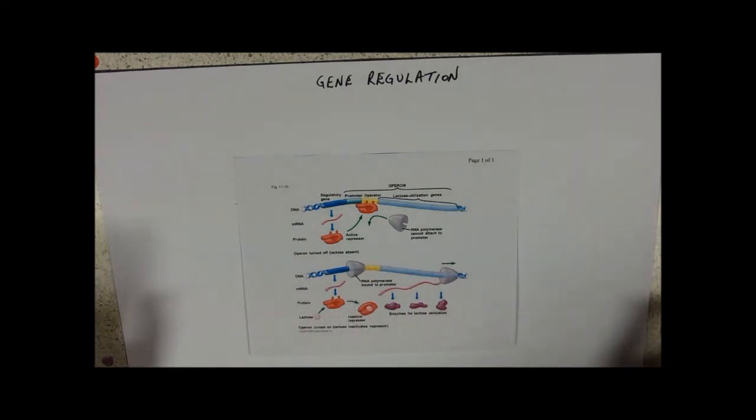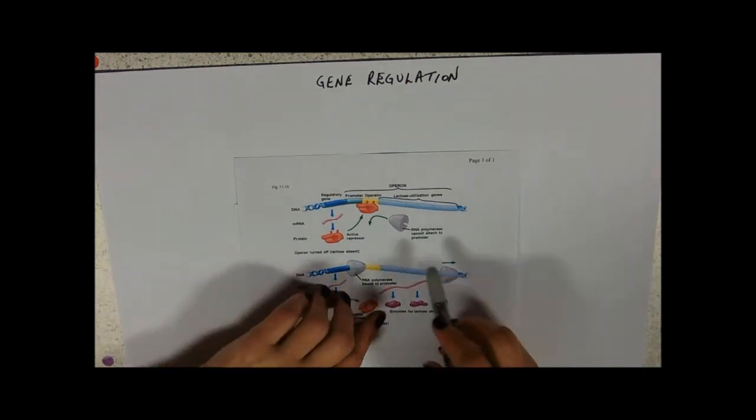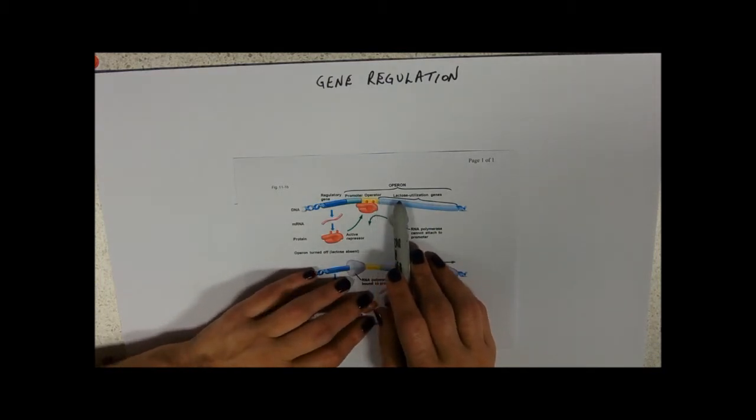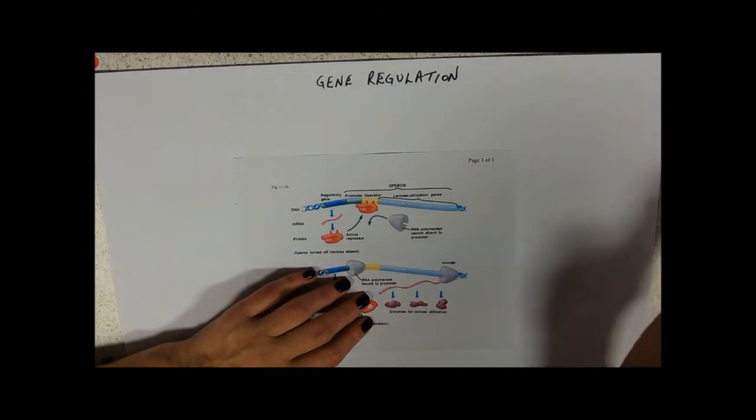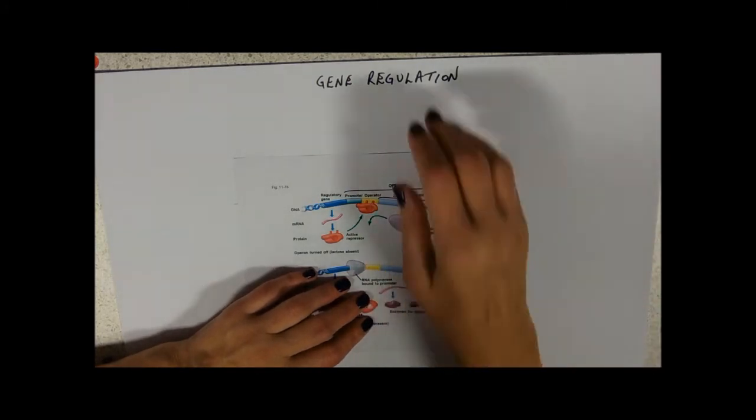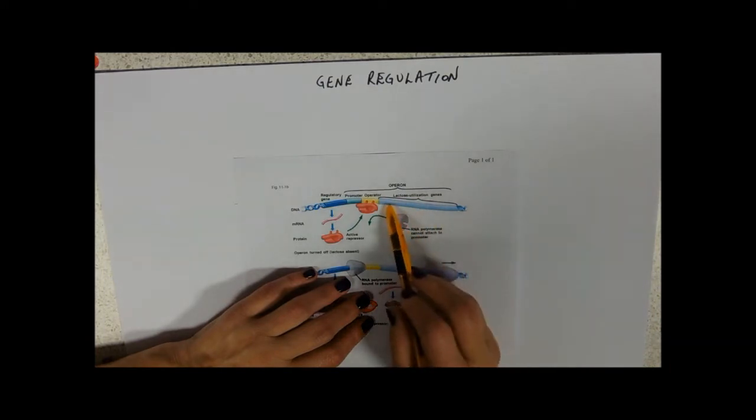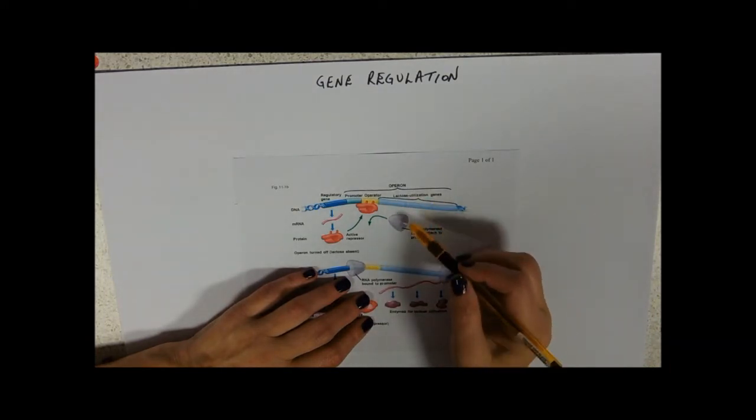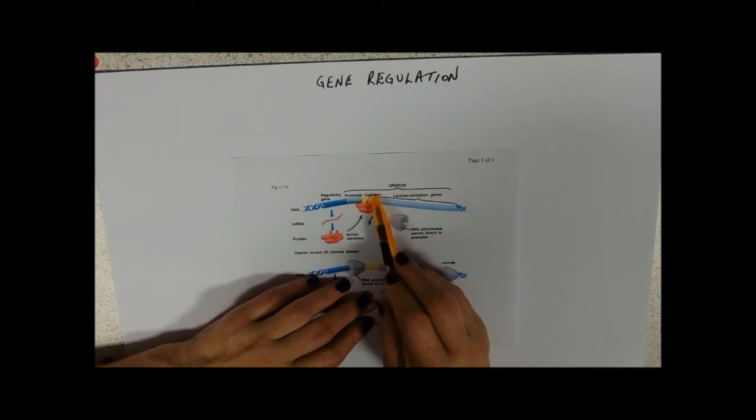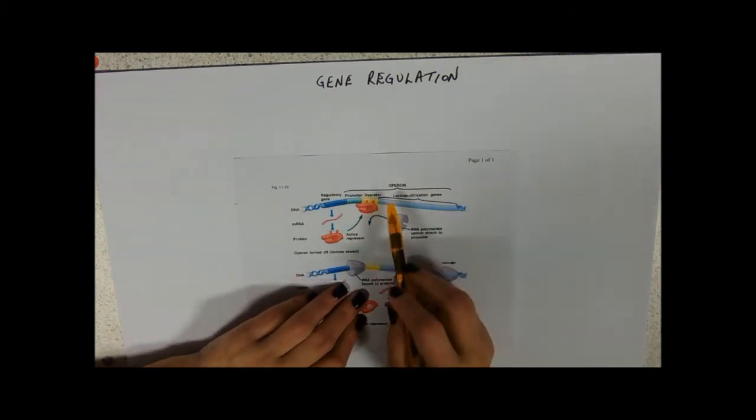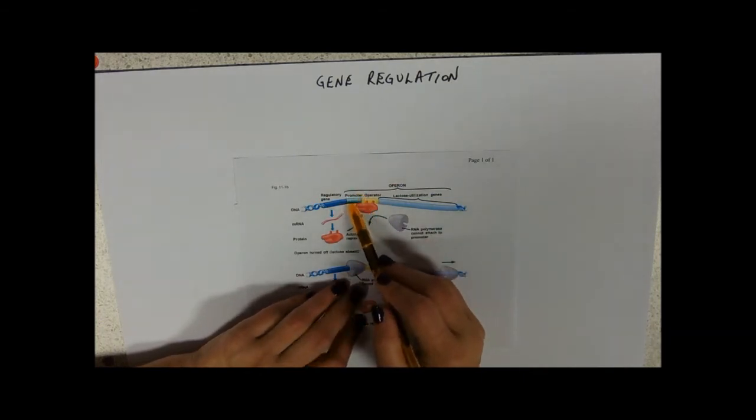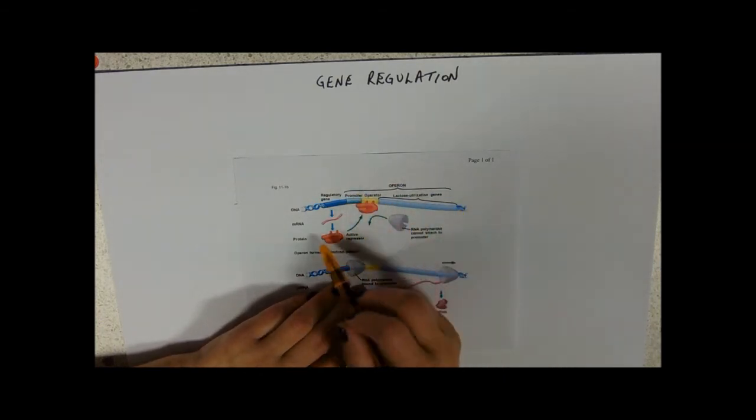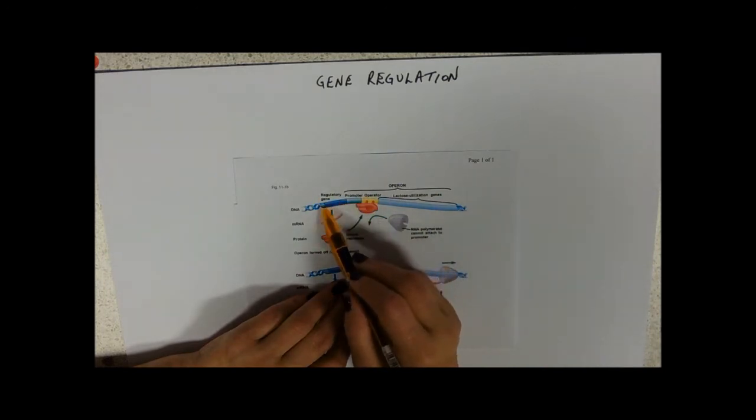There are whole university courses on this, so this is a very simplistic view. But if we look at this top diagram here, we've got our lactose utilization genes. They're actually the ones that are coding, so this is an example. These are coding for the enzyme lactase. You can see that this yellow operator gene allows that coding to be read, and there's a promoter gene that promotes it. And we also have a regulatory gene.